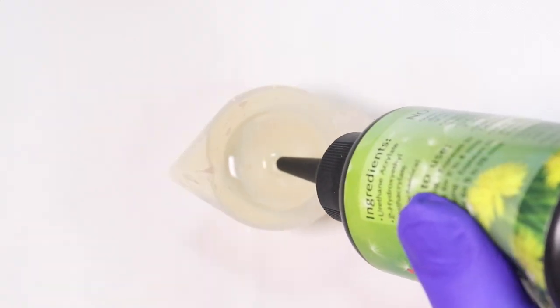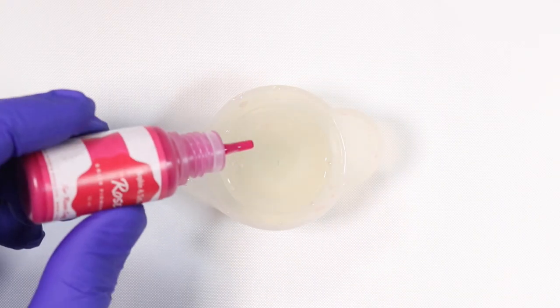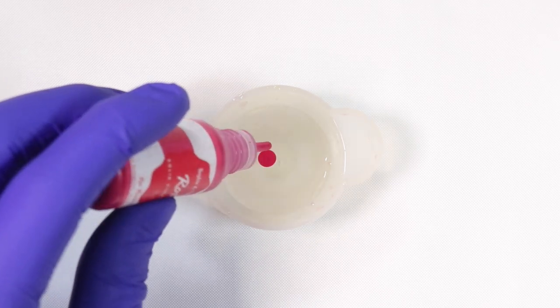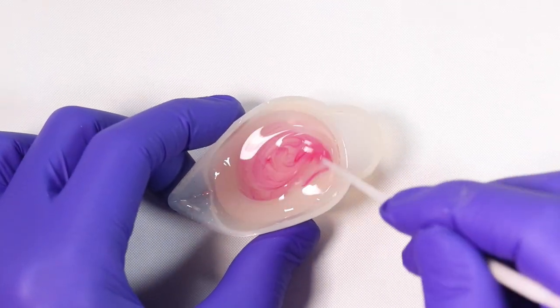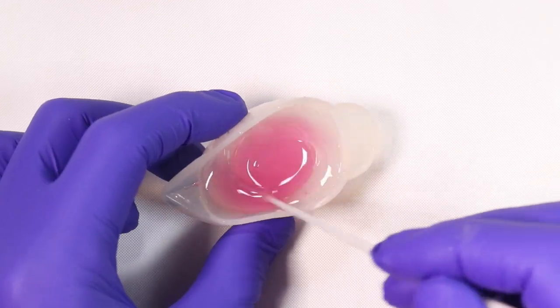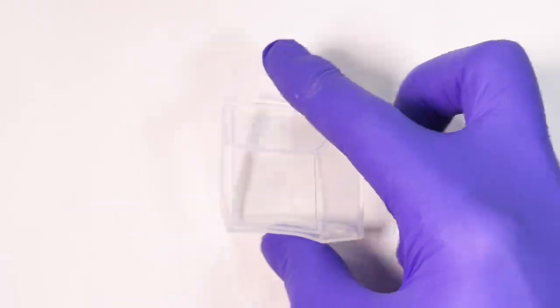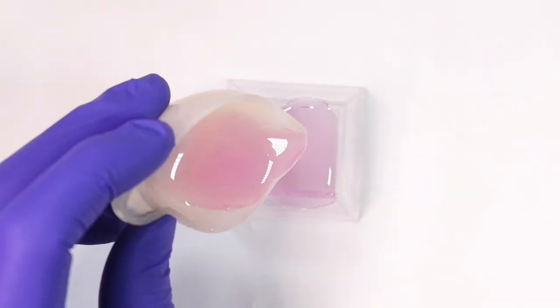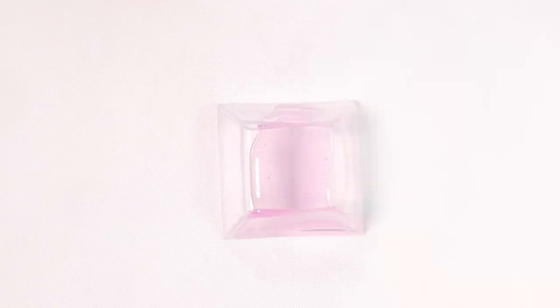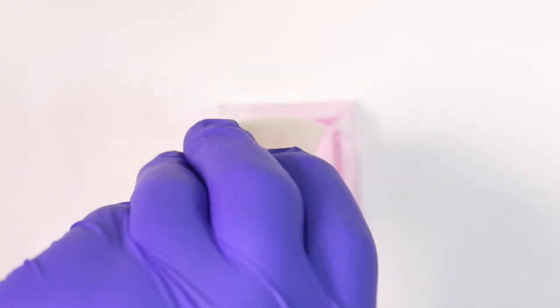So then we're going to make the box that comes for the burger. I'm going to make a mixture of pink and pour that into the bigger box mold. Once I pour it in midway, I'm just going to tap it on the table so that the resin settles down.